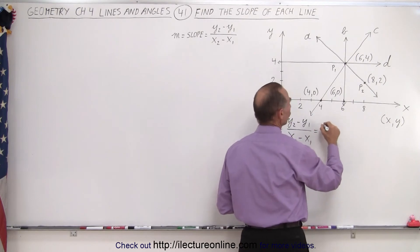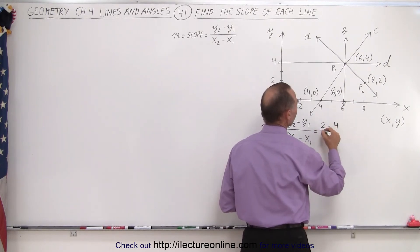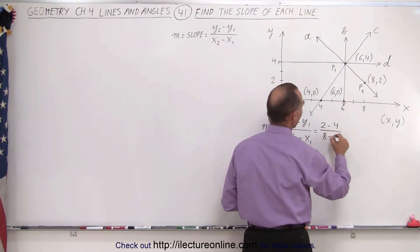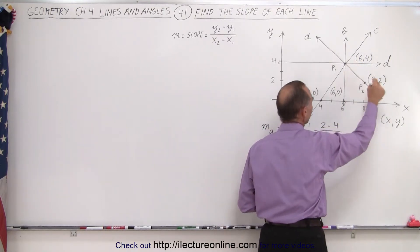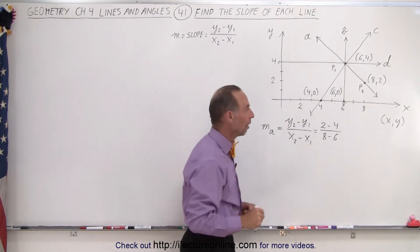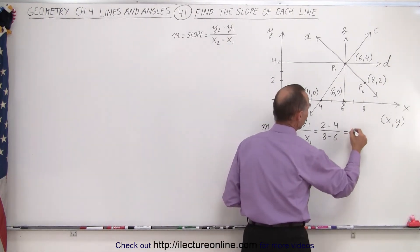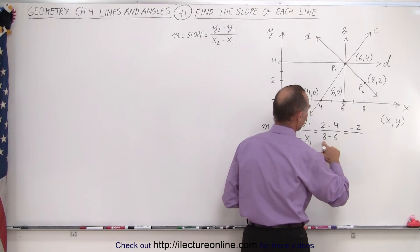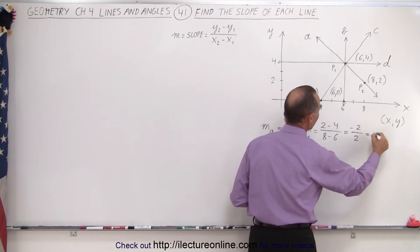So we can write this as 2 minus 4 divided by 8 minus 6. Notice I call this point two and this point one, so I take the coordinates of point two and subtract the coordinates of point one. So this becomes minus 2 divided by 8 minus 6, which is 2, which is equal to negative one.